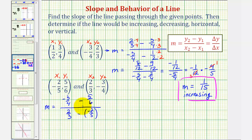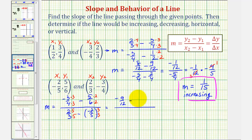When the denominators are four and six, the least common denominator would be twelve. To convert negative three-fourths to twelfths, multiply by three over three. To convert five-sixths to twelfths, multiply by two over two. Looking at the change of x, with denominators of three and five, the least common denominator is fifteen. Multiply two-thirds by five over five, and negative two-fifths by three over three. So we have negative nine-twelfths minus ten-twelfths divided by ten-fifteenths. Here we have minus a negative, which becomes plus a positive, so plus six-fifteenths. This gives us negative nineteen-twelfths divided by sixteen-fifteenths.